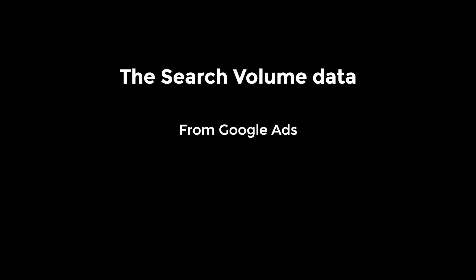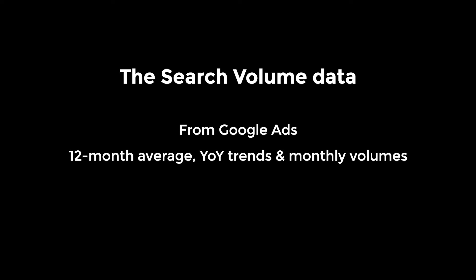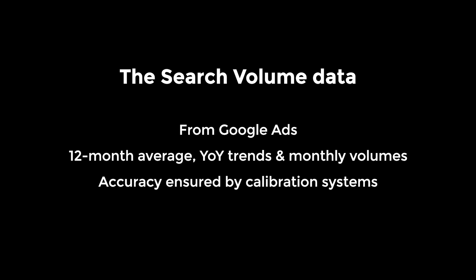In conclusion, with SEO Monitor, you get monthly updated data from Google Ads, expressed as the standard 12-month average, year-over-year search trends, and monthly search volumes. Calibration systems ensure that you will receive accurate data at both keyword and group levels, and this helps you make informed decisions from a search-demand perspective.